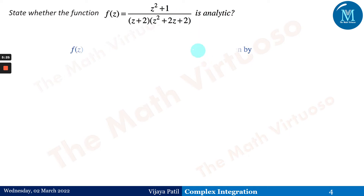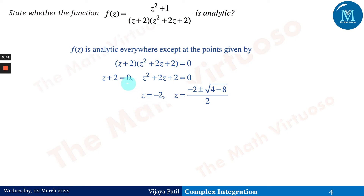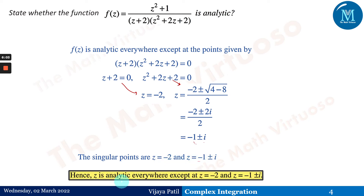State whether the function is analytic. f(z) is analytic everywhere except at points where the denominator equals zero. Setting the denominator to zero: z + 2 = 0 gives z = −2, and z² + 2z + 2 = 0 gives z = (−2 ± 2i)/2 = −1 ± i. So the singular points are z = −2 and z = −1 ± i, meaning f(z) is analytic everywhere except at these points.